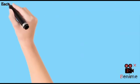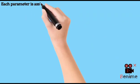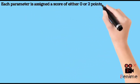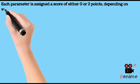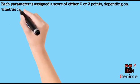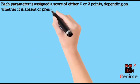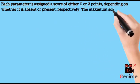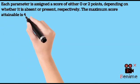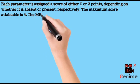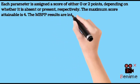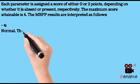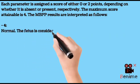Each parameter is assigned a score of either 0 or 2 points, depending on whether it is absent or present, respectively. The maximum score attainable is 4. The MBPP results are interpreted as follows: 4 is Normal — the fetus is considered to be in a healthy condition; 2 is Borderline — further evaluation or monitoring may be required; 0 is Abnormal — additional testing and intervention are usually recommended.